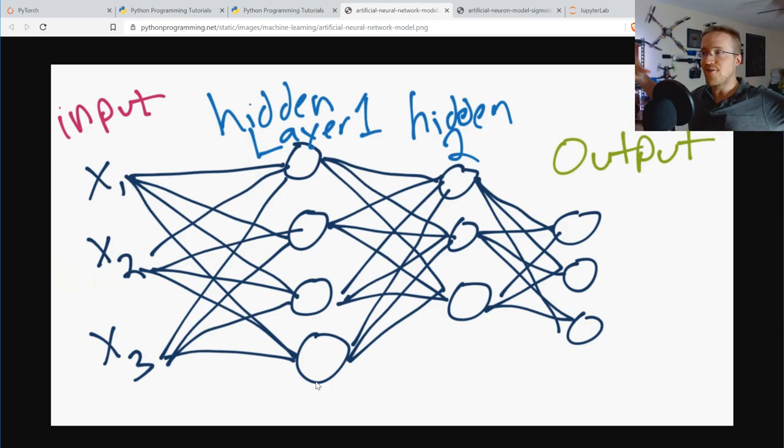But at the end of the day, it's like this gigantic function with like a million variables. Sometimes more - I'm not even exaggerating. 3 million variables is a pretty small neural network. 30 million variables is a regular neural network. So it's just so many things that it gets to tweak and change.